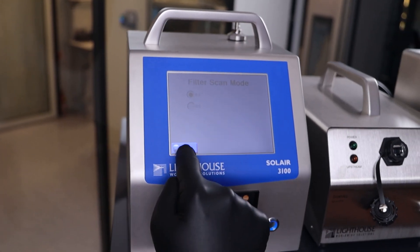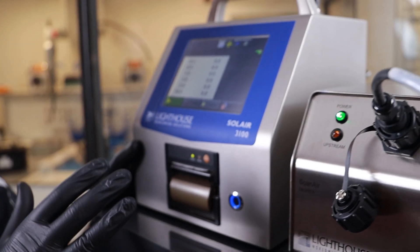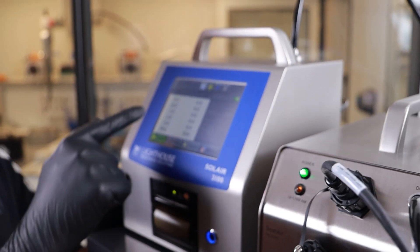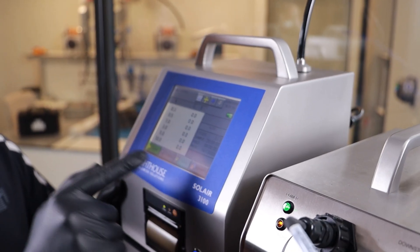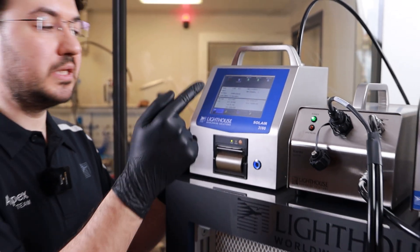First one is the Lighthouse Solair 3100 particle counter. This particle counter counts from 0.3 micron up to 10 micron. The same device can be used for filter testing as well as for clean room classification.